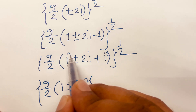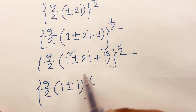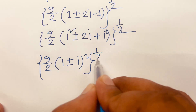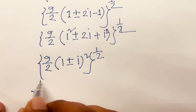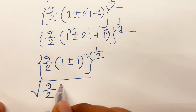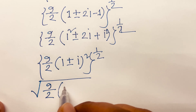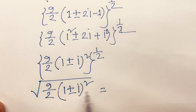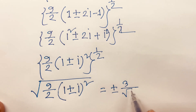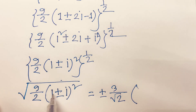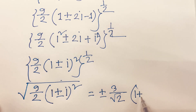Now applying the identity a squared plus 2ab plus b squared equals a plus b whole squared. Then it will be square root of 9 over 2 times 1 plus or minus i whole squared. We know that square root of 9 is 3, and the square root 2 terms cancel. So we find 3 times 1 plus or minus i.